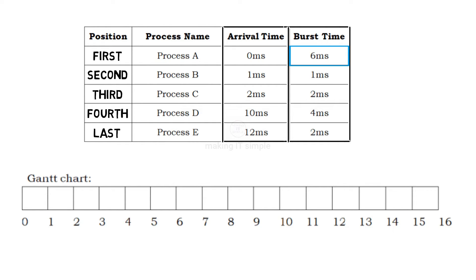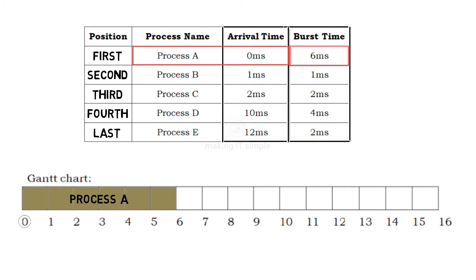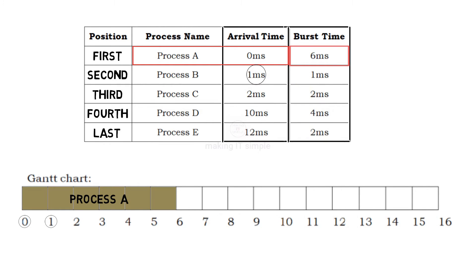Time starts at zero. At 0ms, process A arrived, so it gets scheduled for CPU execution. Process A's burst time is 6 milliseconds, so it executes from 0 to 6ms. At 1ms, process B arrives but must wait in the ready queue, because this algorithm is non-preemptive — others must wait for the complete execution of process A.